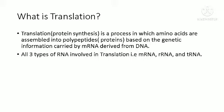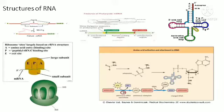There are three important types of RNA for the process of translation: the mRNA, the rRNA, and the tRNA. All three interact in order to synthesize the protein that is coded for by the DNA.